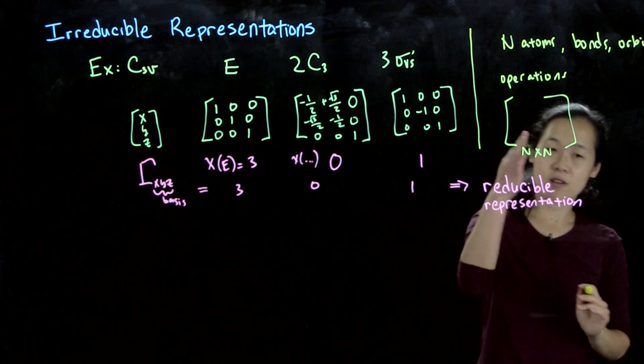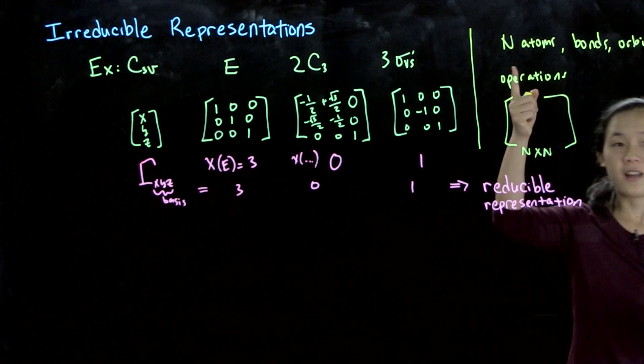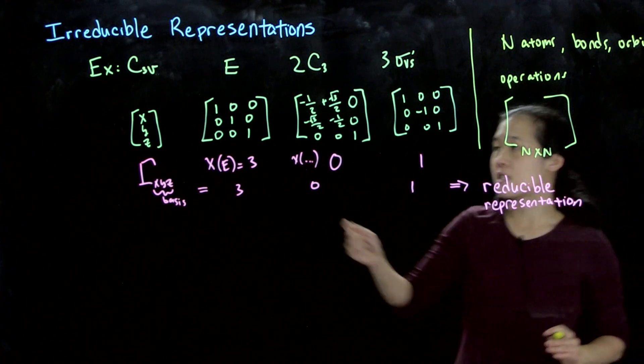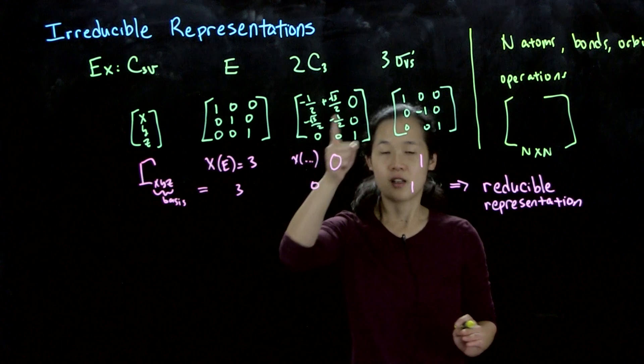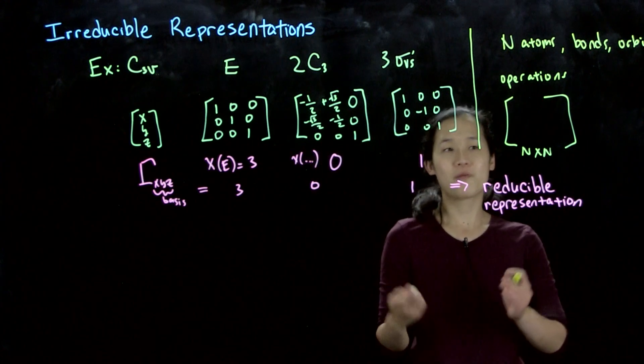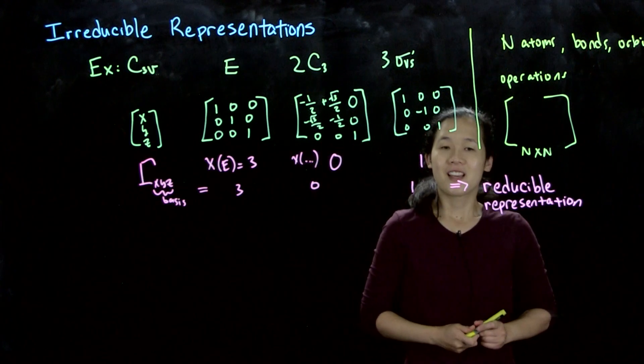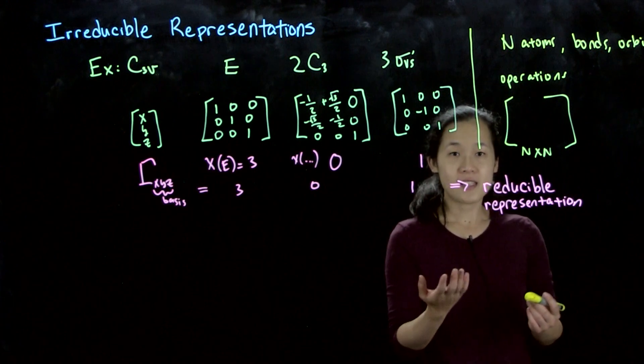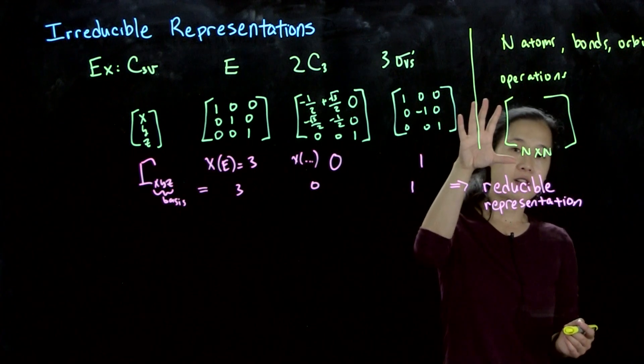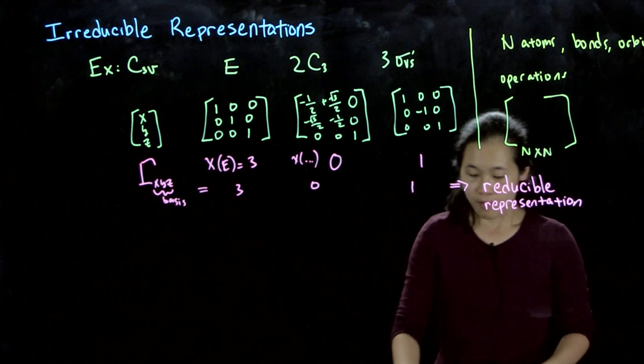So if we're in the C3V point group, but we have n atoms, like 100 atoms, each symmetry operation will be a 100 by 100 matrix. So that would be horrible. The n by n matrix is impossible to deal with.